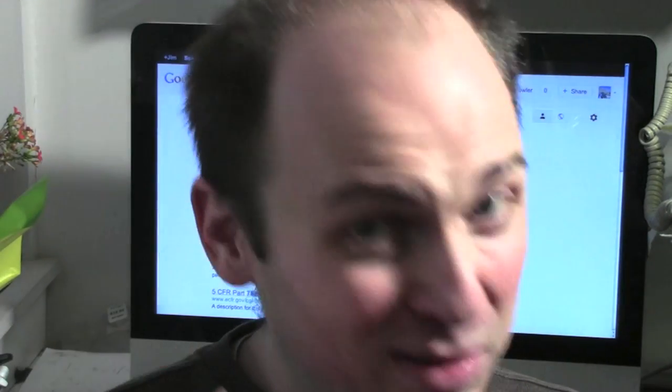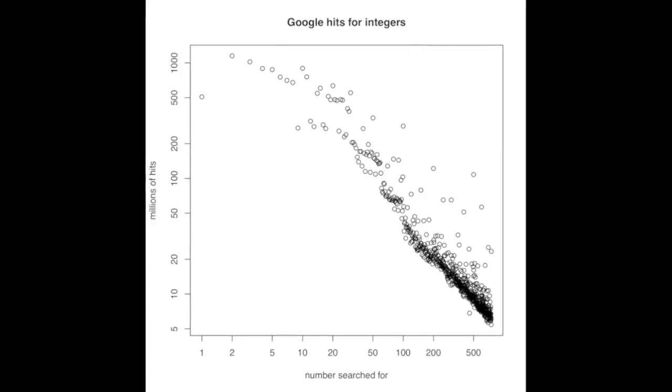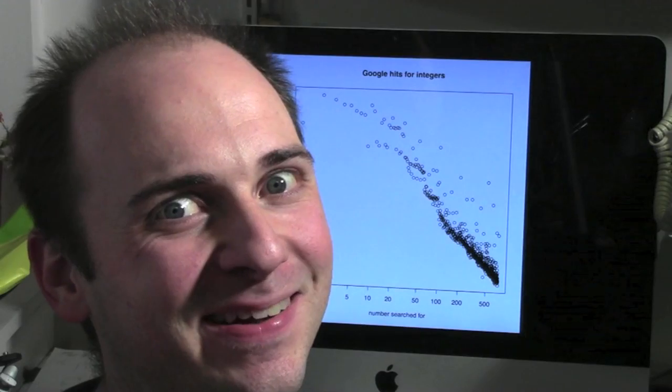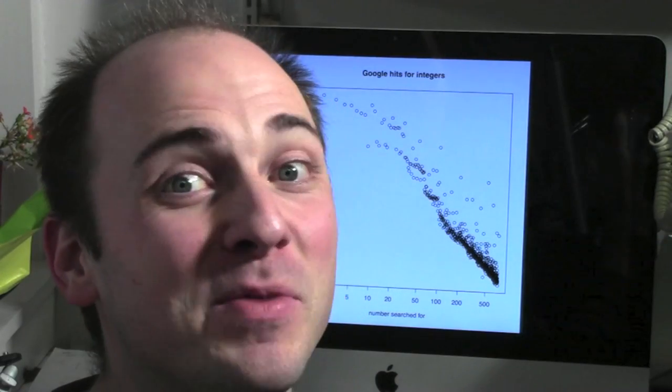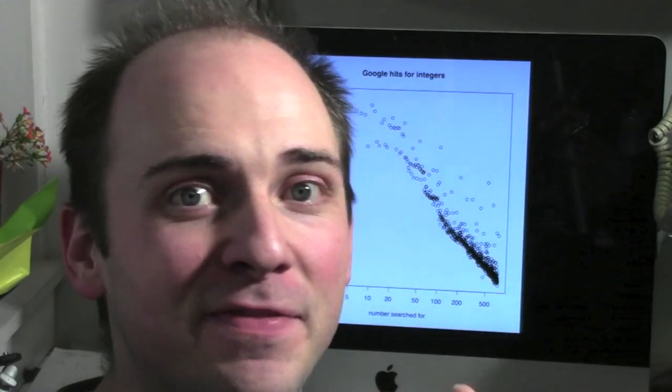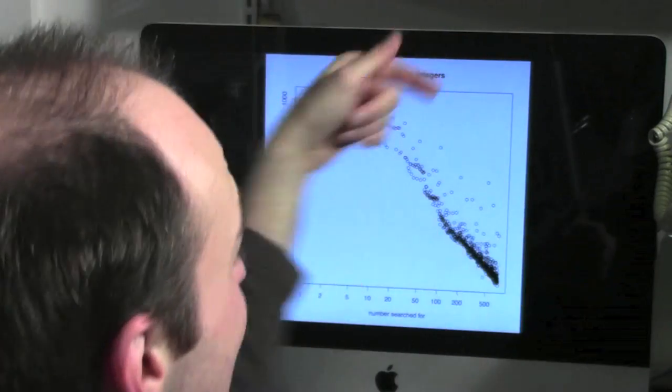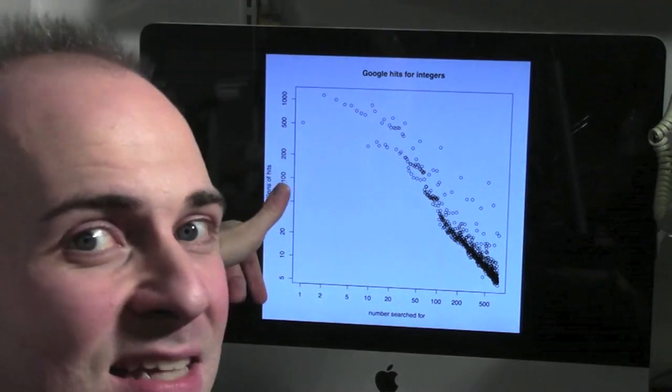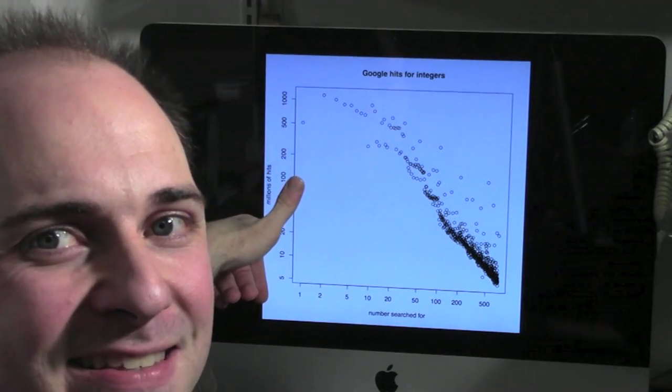Now, if we're persistent, we can plug in lots of numbers and make a really nice looking chart. You do this for hundreds of numbers - you type them into Google, you see how many Google hits you get, and you can plot them. It's a function, so you can plot the graph of the function. Along the x-axis is the number that I typed into Google. On the y-axis is the millions of Google hits that I get.